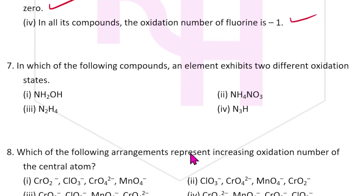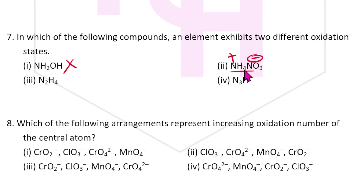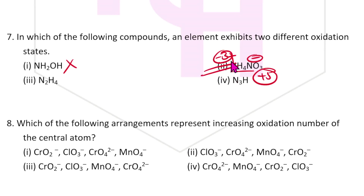Seventh question: In which of the following compounds does an element exhibit two different oxidation states? Hydrogen or oxygen or nitrogen — checking the options. NH₄NO₃ has possibility: in NH₄⁺, nitrogen exhibits −3; in NO₃⁻, nitrogen exhibits +5. So NH₄NO₃ is the answer — nitrogen shows two different oxidation states.